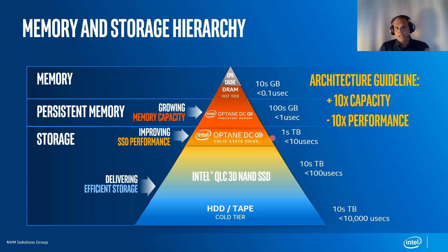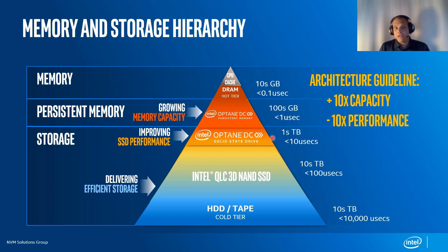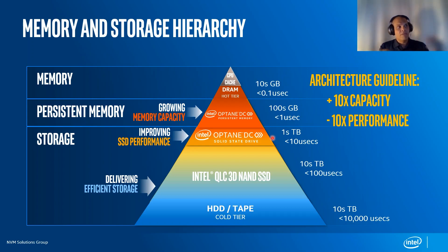Optane is Intel's brand name for this technology, and it's fundamentally different. DRAM stores charge in leaky capacitors that bleed off and refresh. NAND SSDs store charge in a transistor whose dielectric eventually wears out. Optane doesn't store electrons — it actually changes the atomic structure of the media itself to represent ones and zeros. We have Optane DIMMs, Optane data center persistent memory DIMMs, and Optane SSDs — all based on the same media, fitting between DRAM and SSDs in cost and performance.